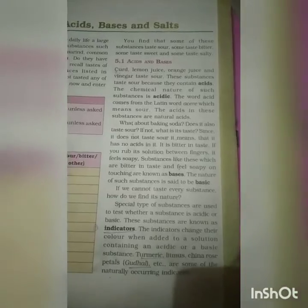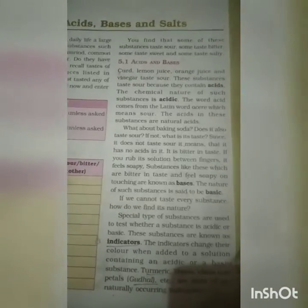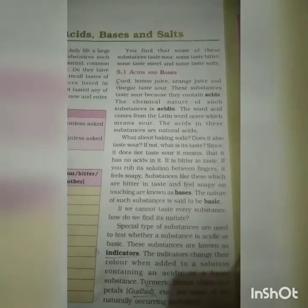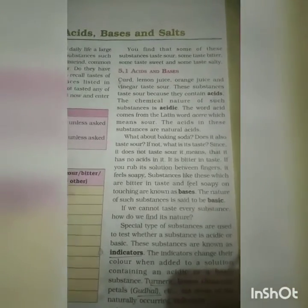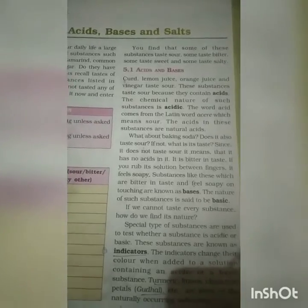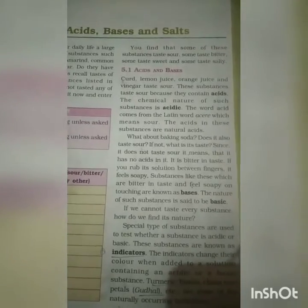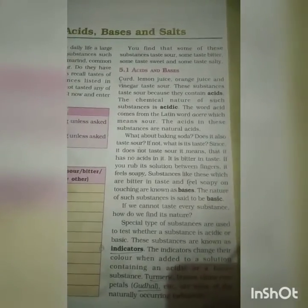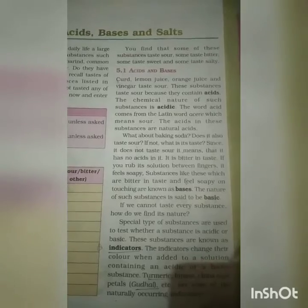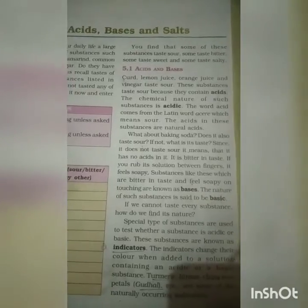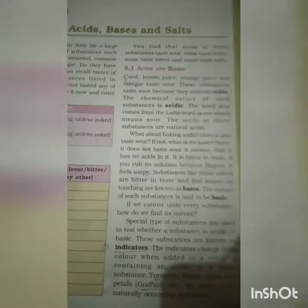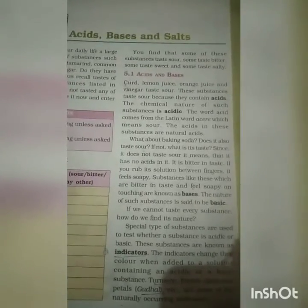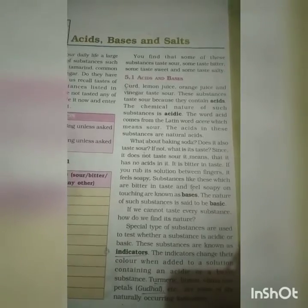For example, some examples of indicators are turmeric, China Rose petals — another name for China Rose petals is Gudhal — litmus paper, phenolphthalein, methyl orange, etc. Indicators are of two types: natural indicators and synthetic indicators.